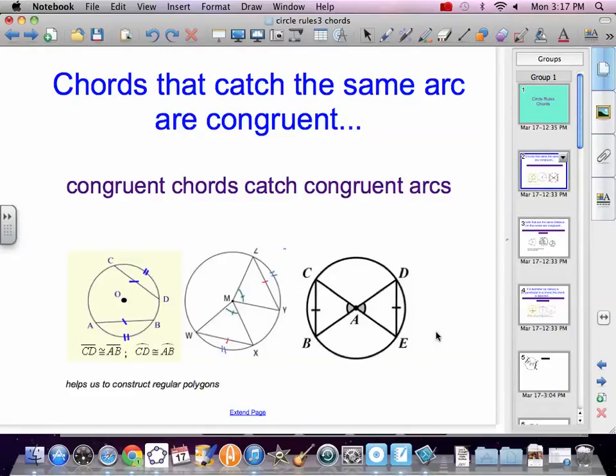One of the first ones is that if two chords both catch the same arc, the same arc angle, or the arc with the same length, then those chords are congruent. It also works backwards, also known as the converse. If there are congruent chords, then they catch congruent arcs.